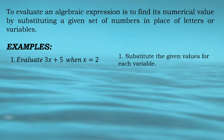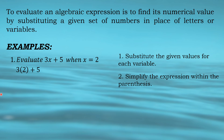First step is to substitute the given values for each variable. As you can see, we only have one variable, which is x, and the given value of x is 2. So what we will do is substitute the number 2 for the variable x — so it becomes 3 times 2 plus 5. In algebra, we don't use the letter x as a multiplication symbol since we use variables like x, so instead of writing 3 x 2, we write 3 open parenthesis 2 close parenthesis, or we can use a dot.